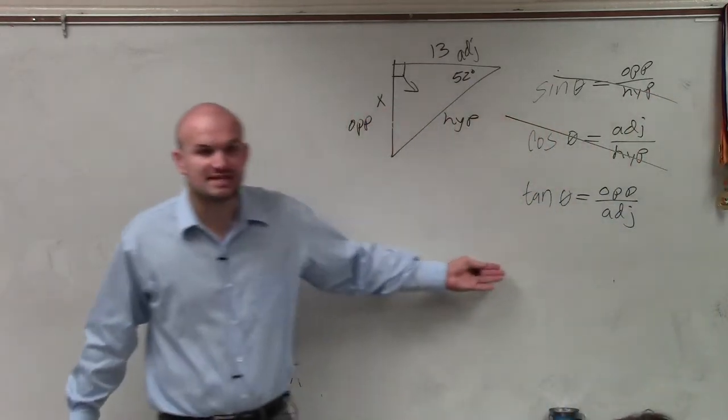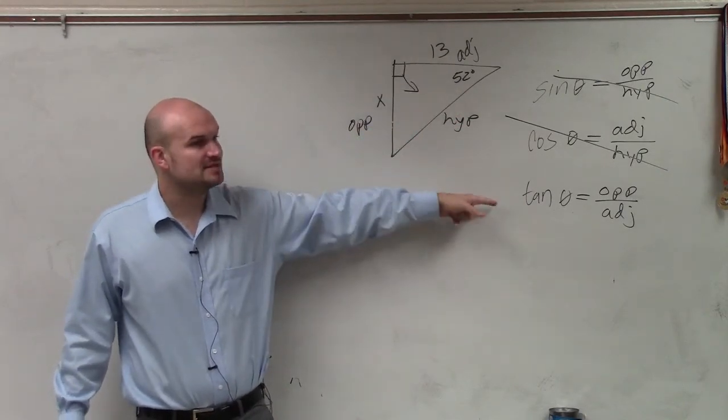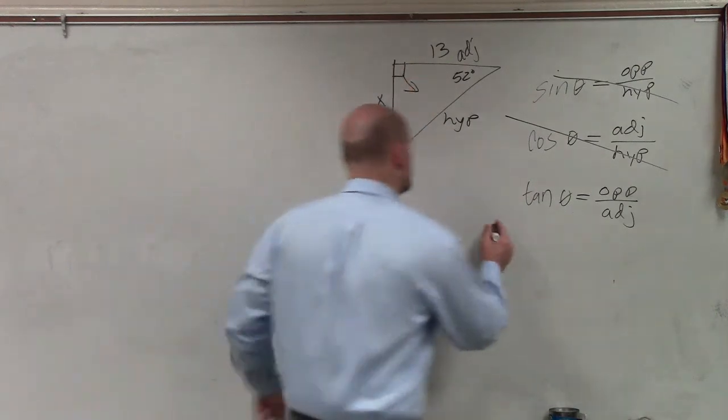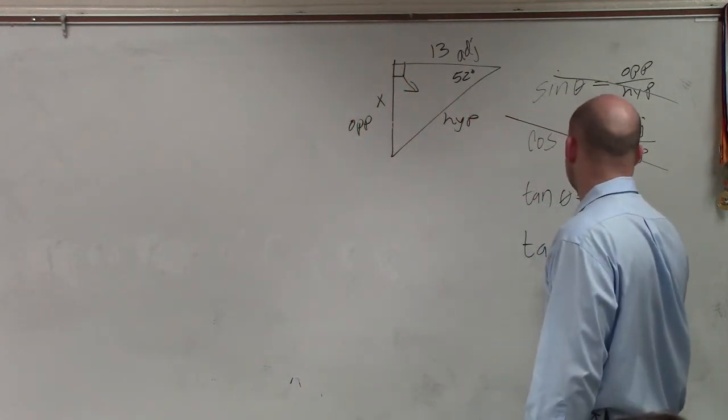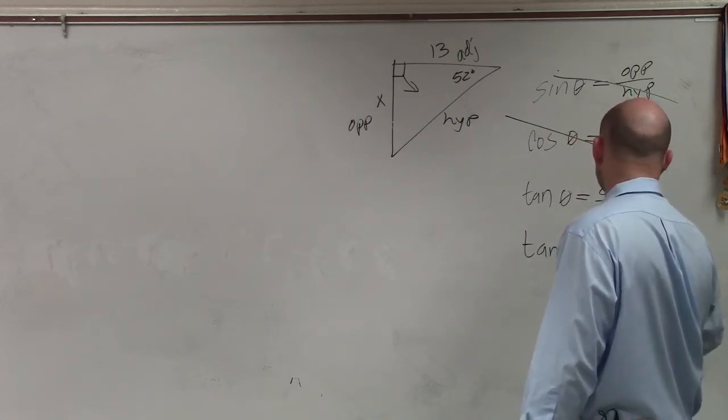Now, do I know the angle of the tangent that I'm going to use? 52 degrees. Do I know the opposite side? X. Do I know the adjacent side? 13. So I can say the tangent of my angle, 52 degrees, is equal to x over 13.